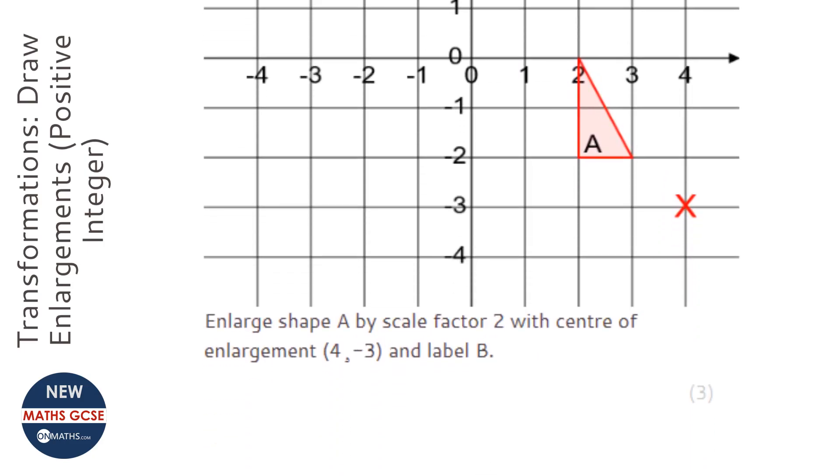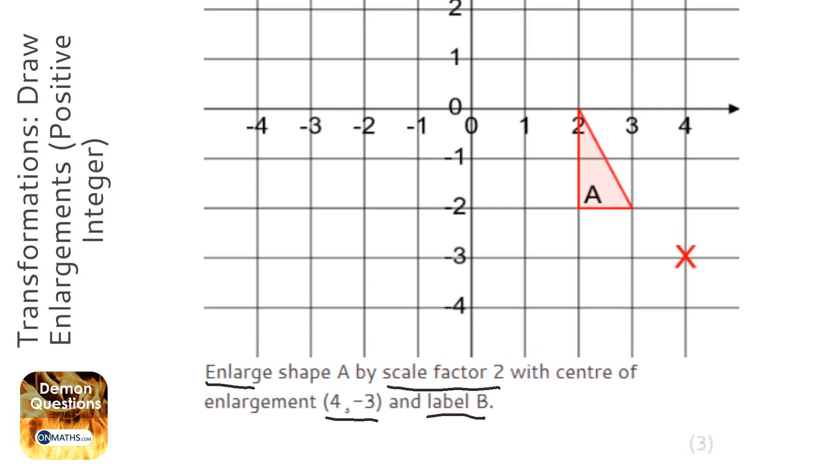Okay, so we're asked to enlarge this shape by scale factor 2, center of enlargement at (4, -3), and then we've got to label it B. Now we have the center of enlargement shown for us, but sometimes you won't be.